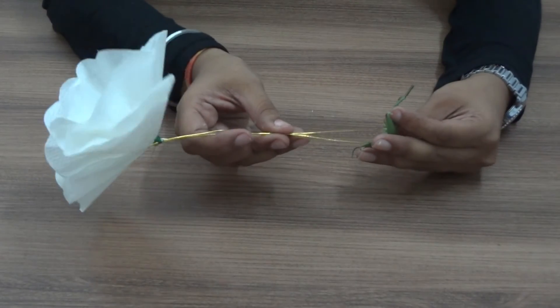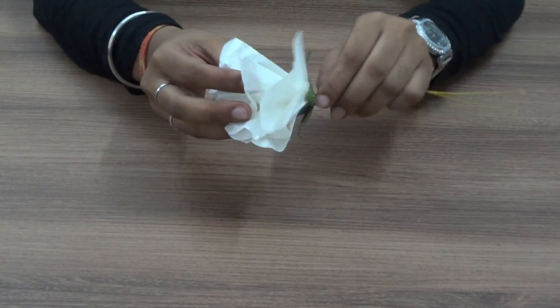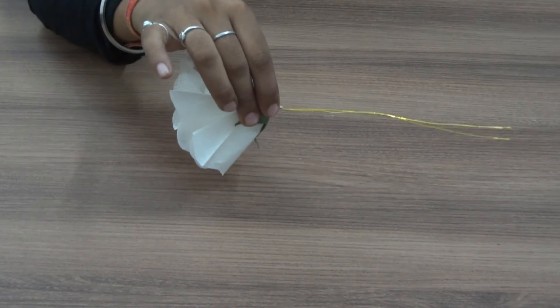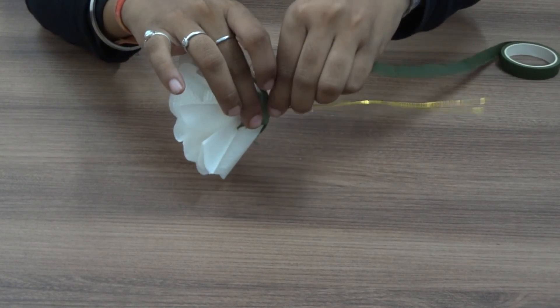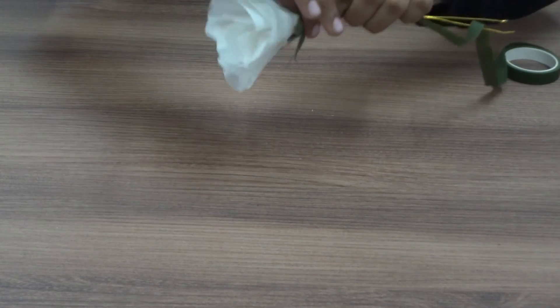Then we will put the leaves on the stem. After the leaves, we will take the leaves and put them tight.